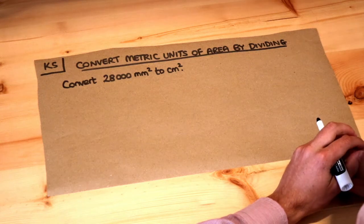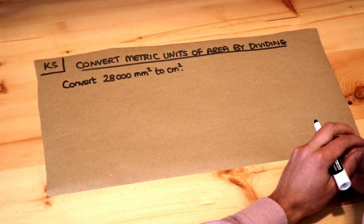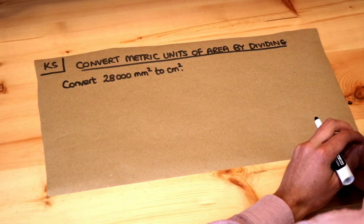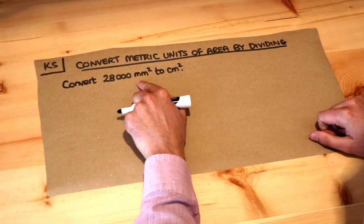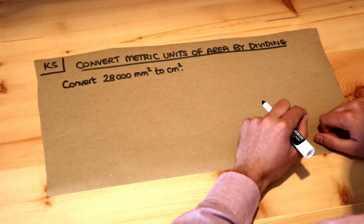Hello and welcome to this Dr Ross Mass key skill video on converting metric units of area by dividing. So we want to convert 28,000 millimetres squared to centimetres squared.